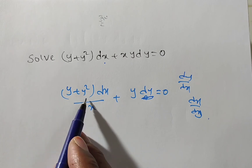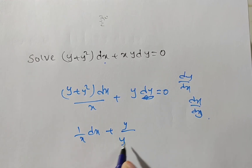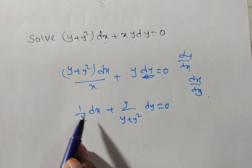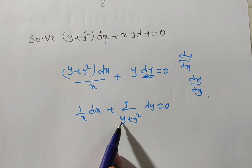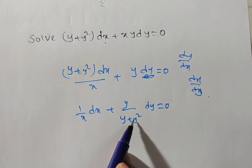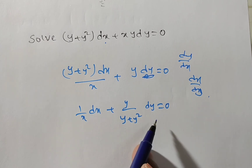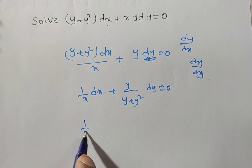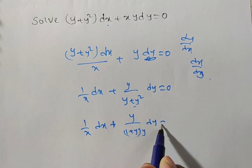I will have (y + y²)(dx/x) + y dy = 0, since x/x = 1. Now taking the dx coefficient (y + y²) to the right side, you will have (1/x)dx + y/(y + y²) dy = 0. Observe that the dx coefficient is a function of x, and the dy coefficient is a function of y only, so we can apply the variables separable method. In the denominator, write the product of linear factors: y(y + 1).